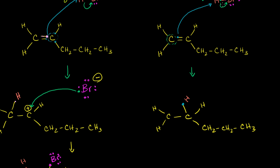The hydrogen lost its electron to the bromine. The bromine originally had seven valence electrons and then nabbed an extra electron from the hydrogen, so now it will have a negative charge — it is a bromide anion. And since this carbon lost an electron — it had four valence electrons, lost one to the hydrogen — it now has a positive charge. It's a carbocation.